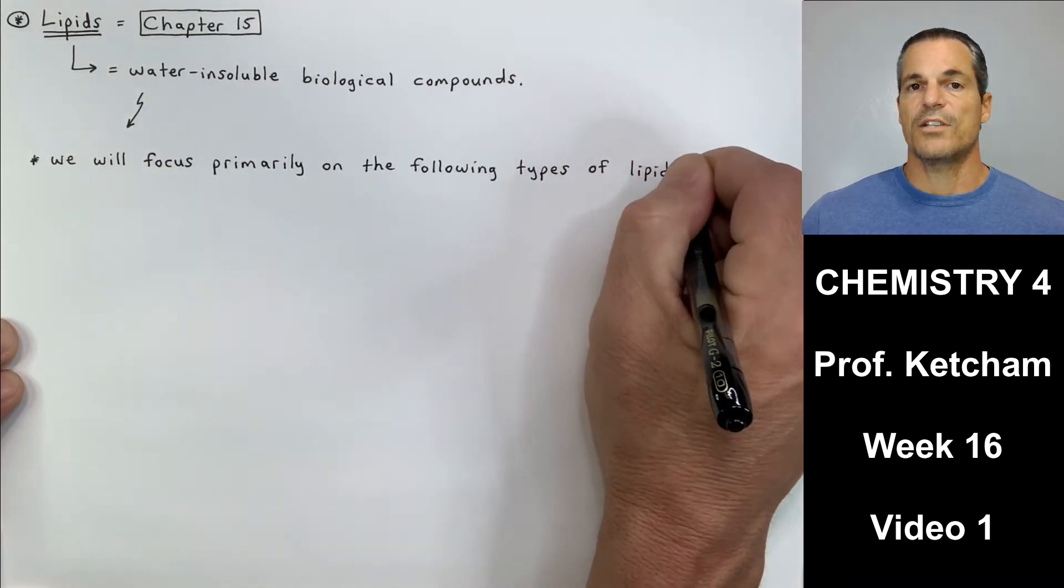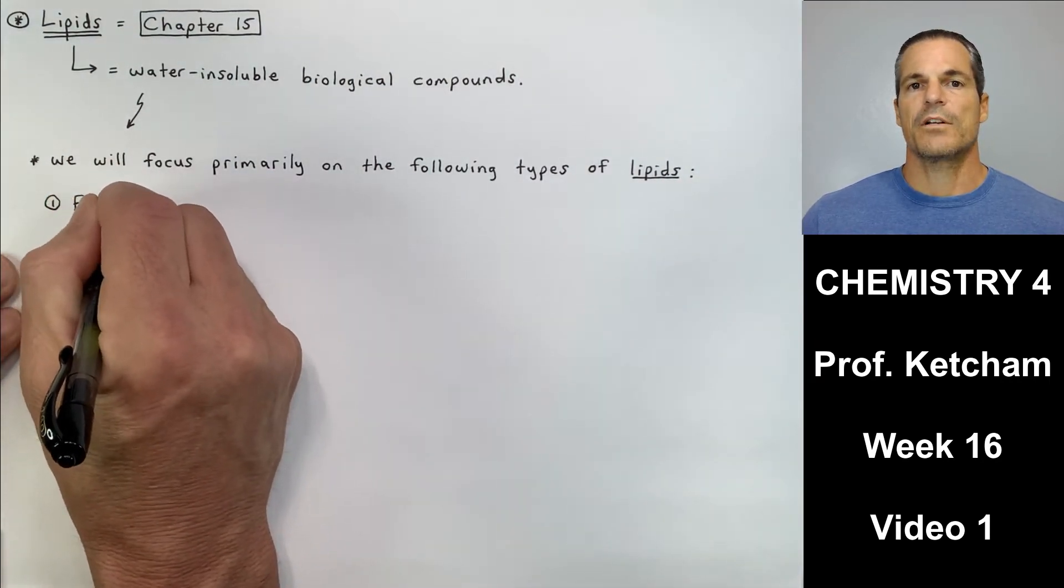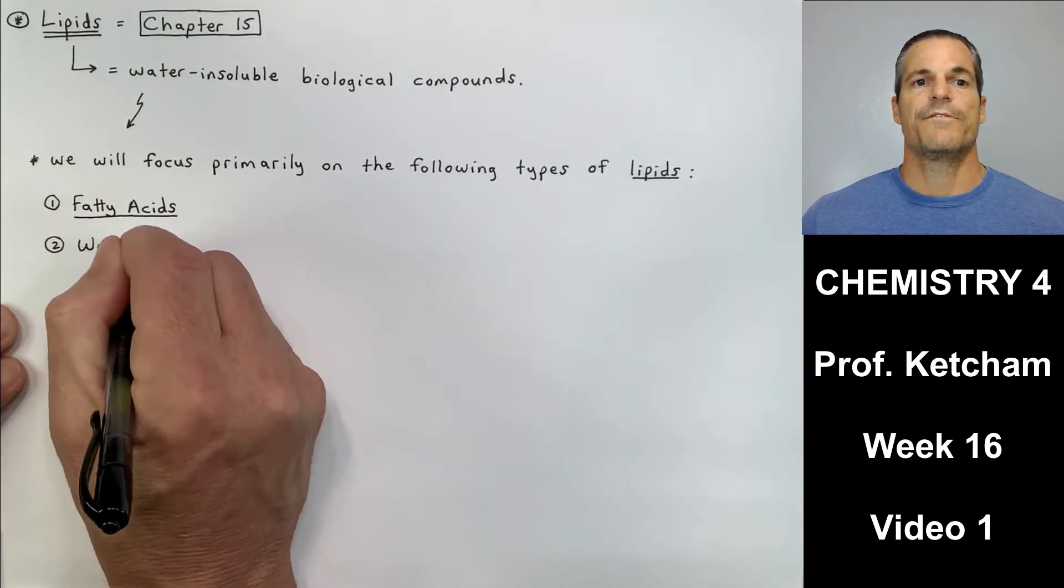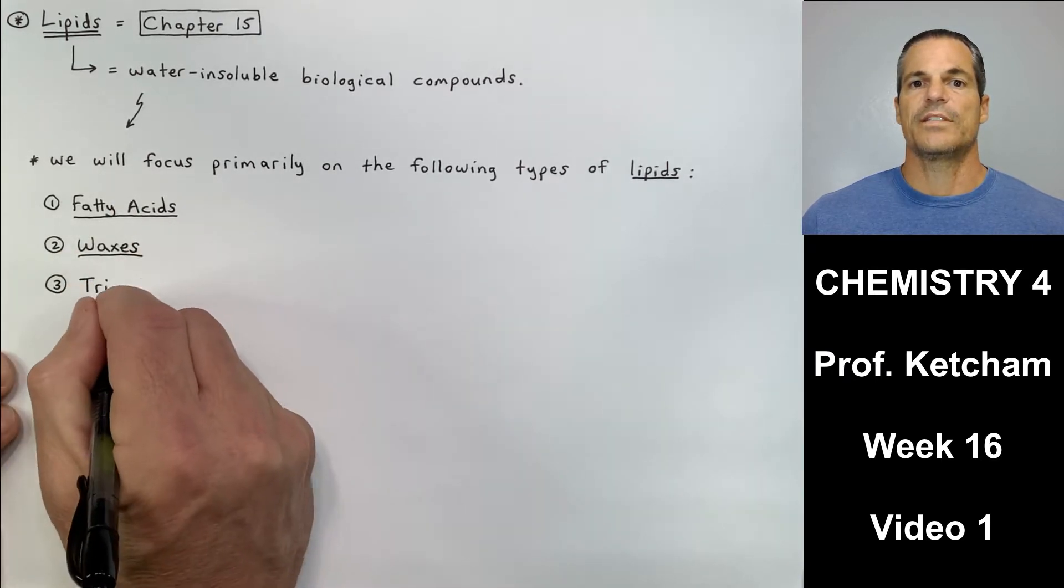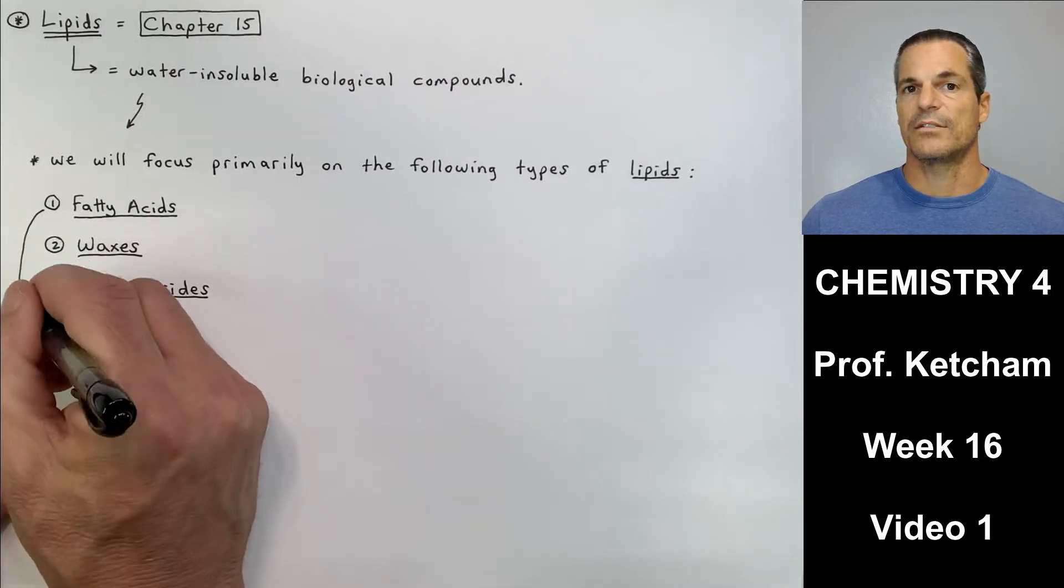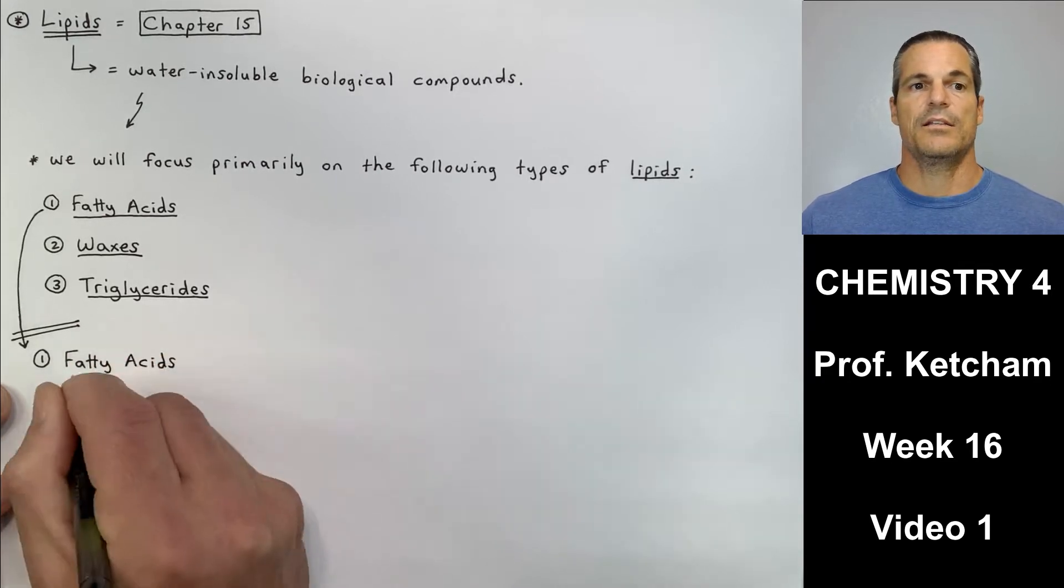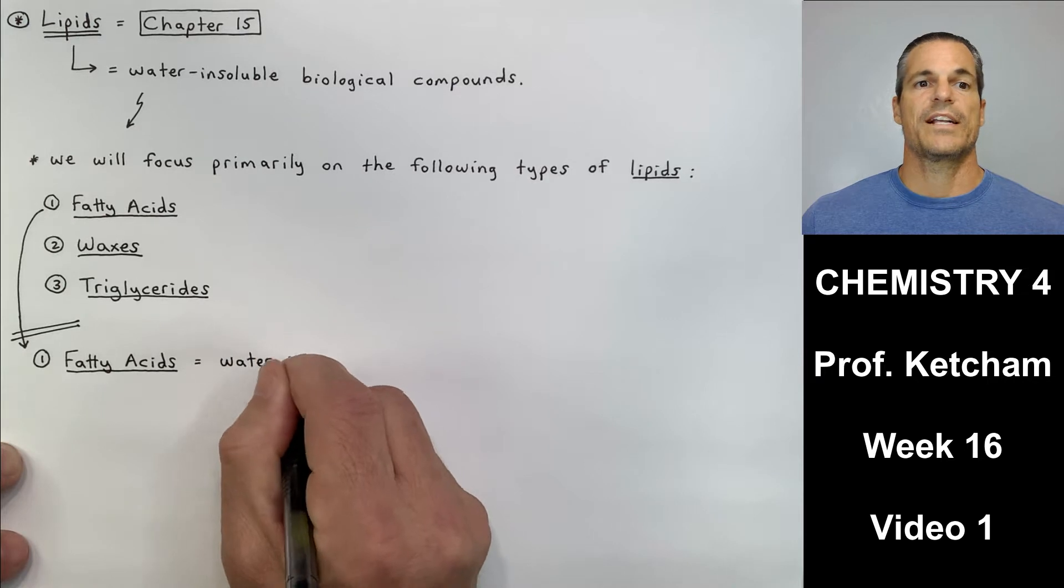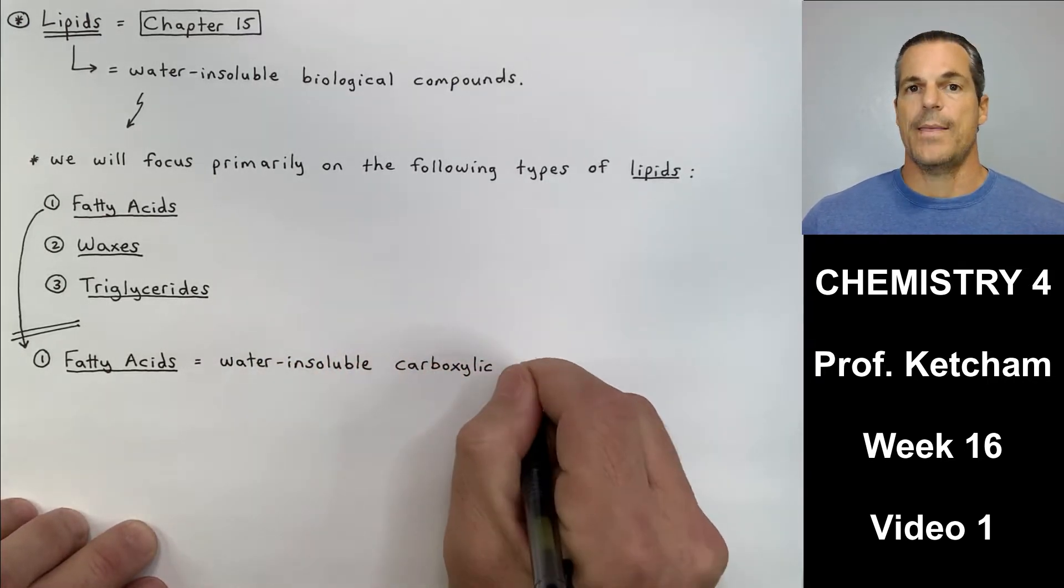Lipids are water insoluble biological compounds. Today we're going to focus on something called fatty acids. We will focus primarily in this entire chapter on the following types of lipids: fatty acids, waxes or wax esters, and triglycerides. Number one we'll do today, fatty acids, and number two, waxes or wax esters and triglycerides we will do in the next video.